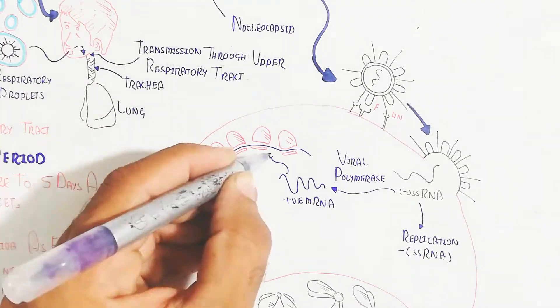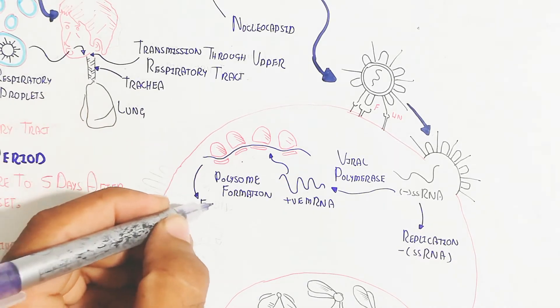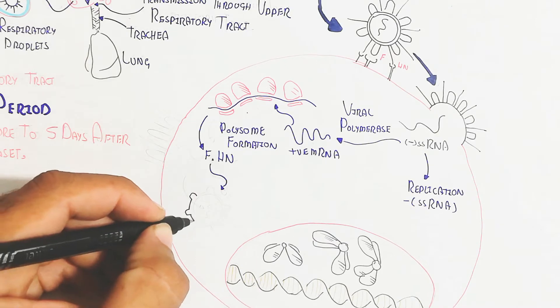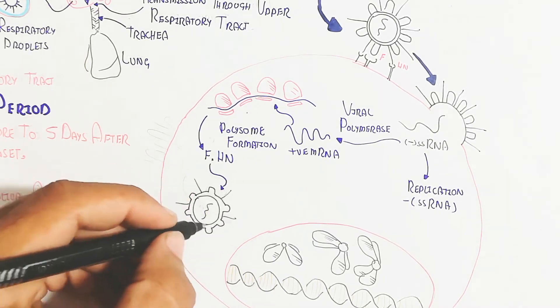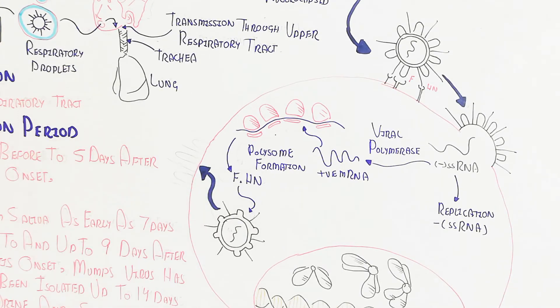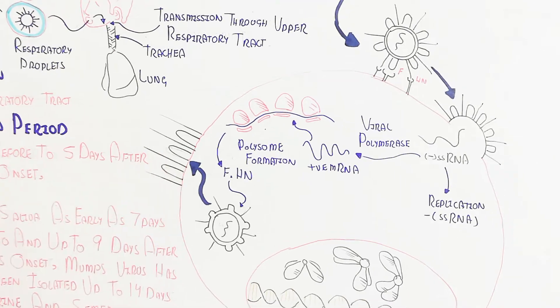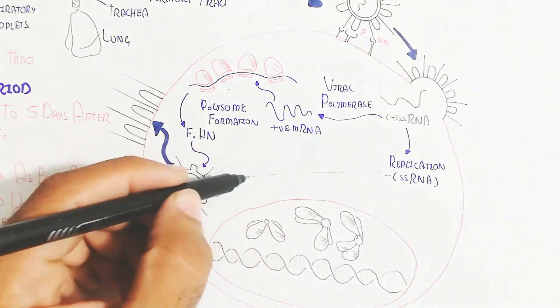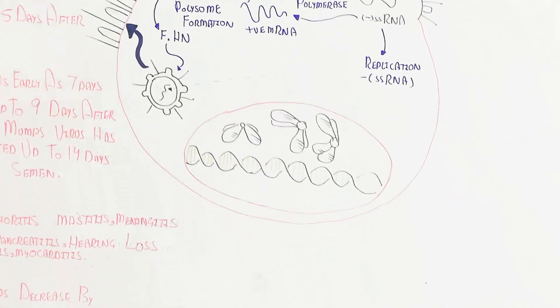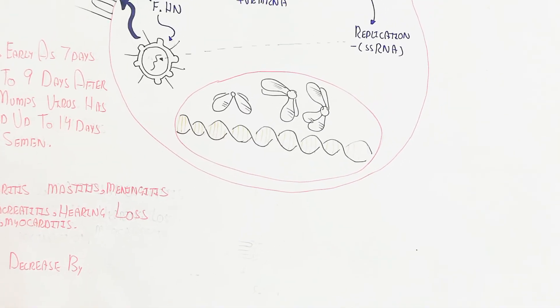After this, polysome formation will occur in the endoplasmic reticulum. The ribosome will bind to form F protein, fusion protein, and HN protein, as well as to form other proteins like nucleocapsid which will combine together with RNA. The protein will bind with the plasma membrane of the host cell.